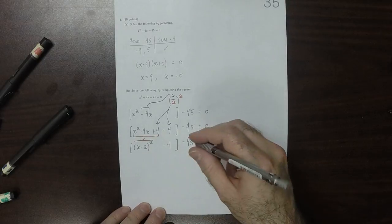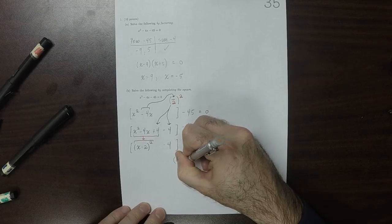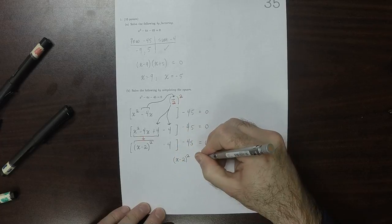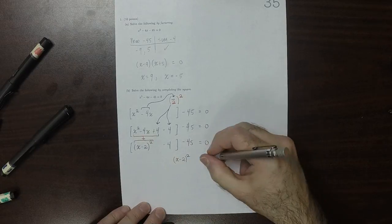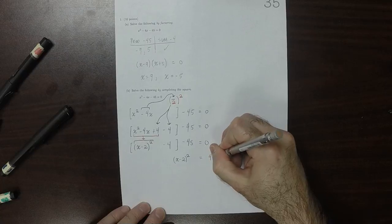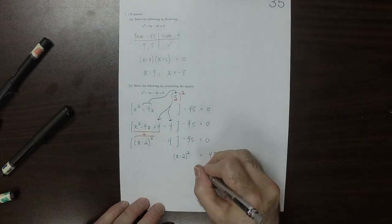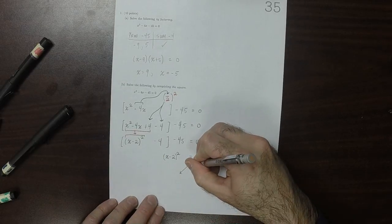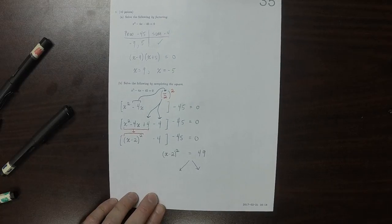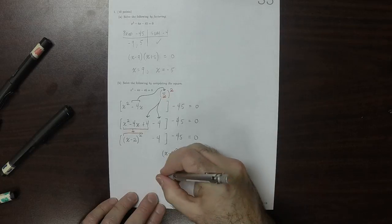And then we can de-associate and collect. So x minus 2 squared is equal to, well, that's negative 49 on the left-hand side, but on the right, that's positive 49, and so now this equation splits in 2, it's saying that whatever is in here has to be equal to positive 7 or negative 7.